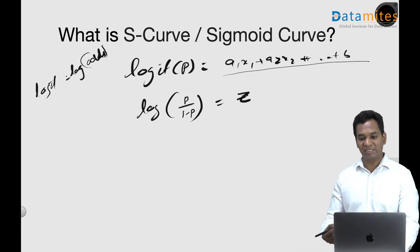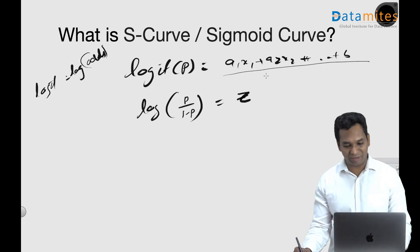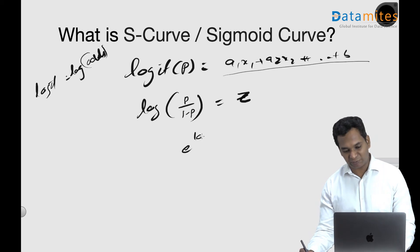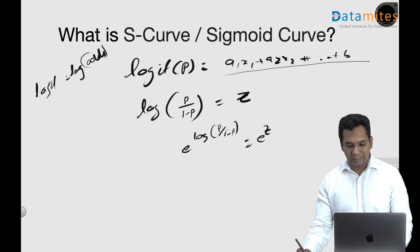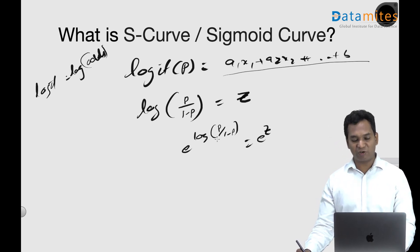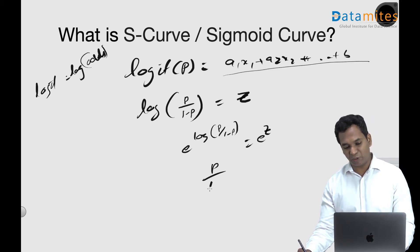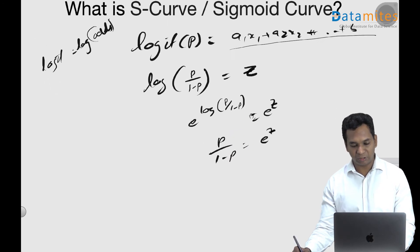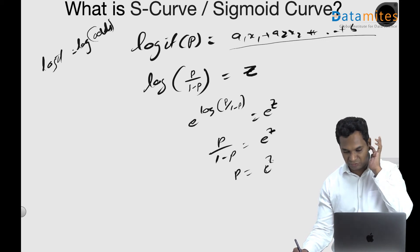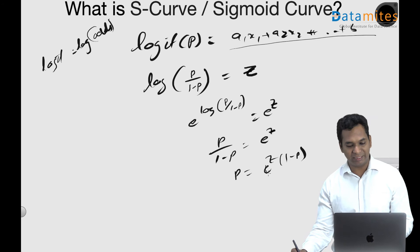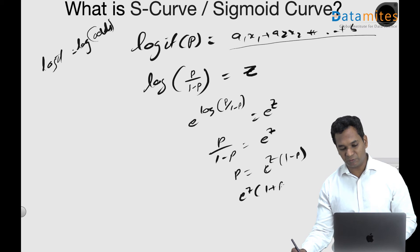I'll call it as z because it's such a big equation. Take an exponential of both sides. Exponential of log of p by (1 minus p) equals e to the power of z. And then e and log, because it's a natural logarithm, gets cancelled. So it results in p by (1 minus p) equals e to the power of z. If you do a bit of algebra, you can get p equals e to the power of z times (1 minus p), and then get e to the power of z to the other side.